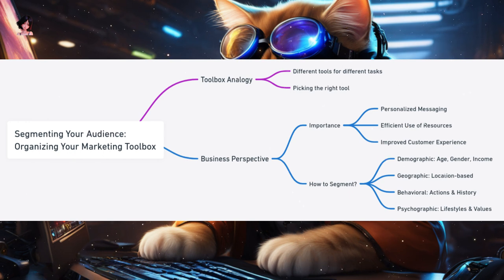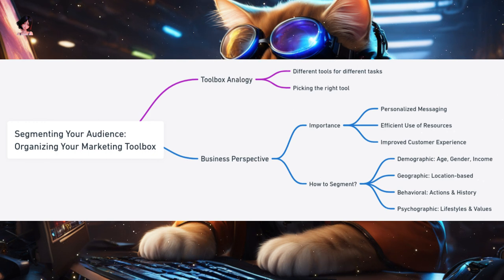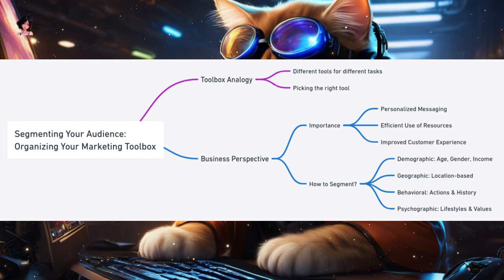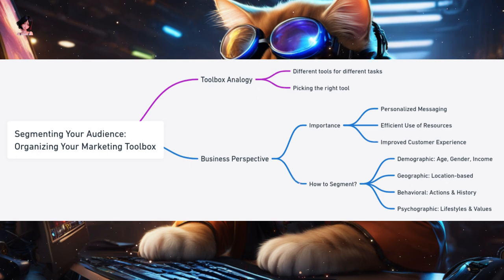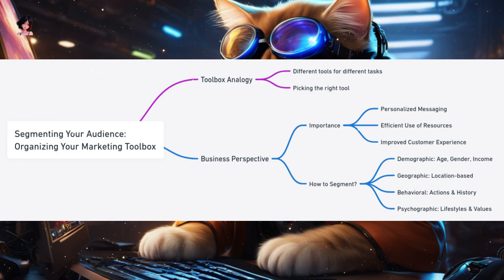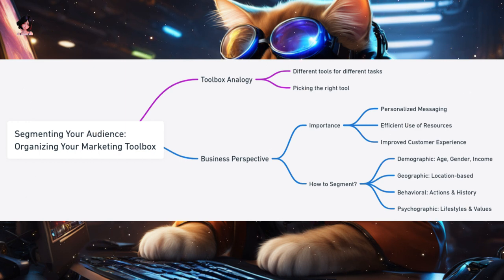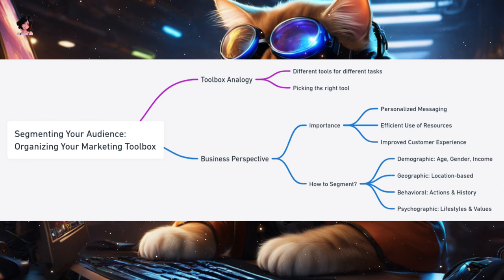How to segment your audience: Demographic segmentation is based on factors like age, gender, and income — for instance, a brand selling makeup might have different campaigns for teenagers versus mature adults. Geographic segmentation is based on location — a company might promote winter coats in colder regions and swimsuits in coastal areas. Behavioral segmentation is based on actions like previous purchases or website visits. Psychographic segmentation dives into lifestyles, values, and interests — a brand promoting eco-friendly products might target individuals passionate about sustainability.